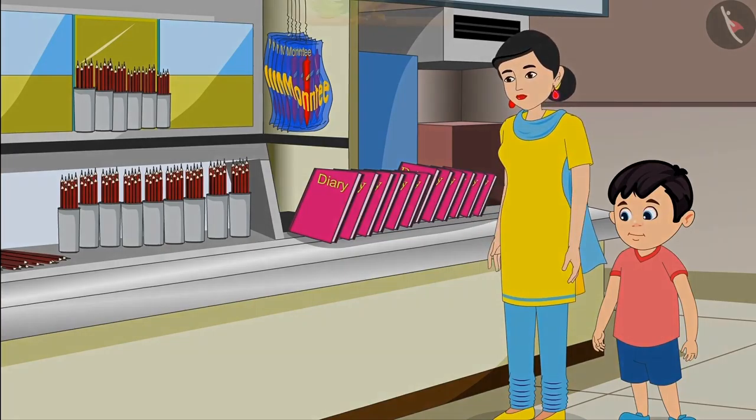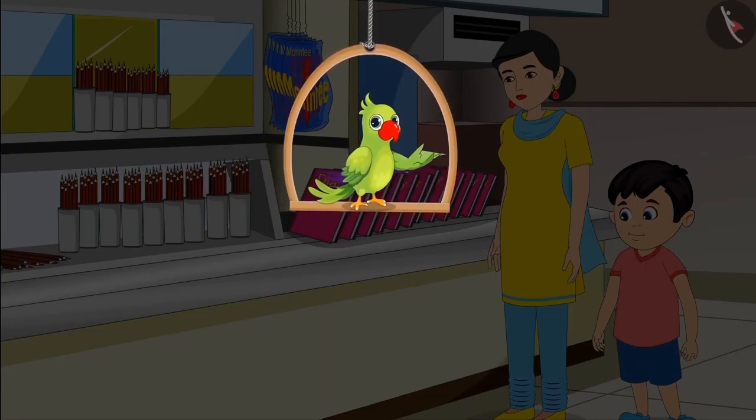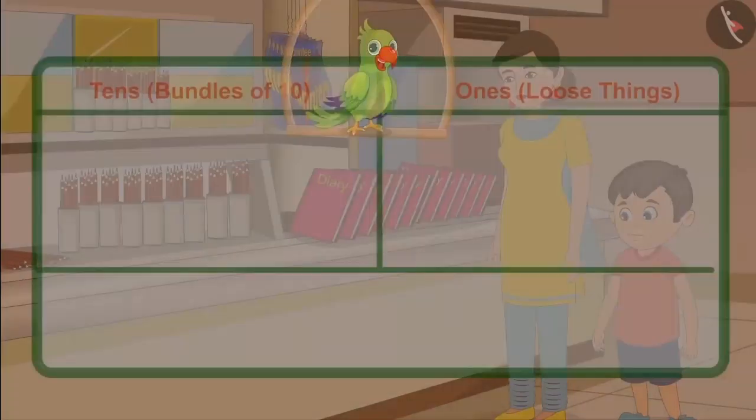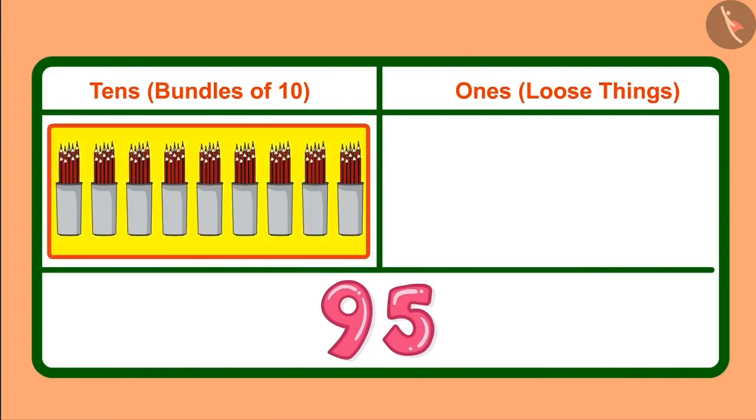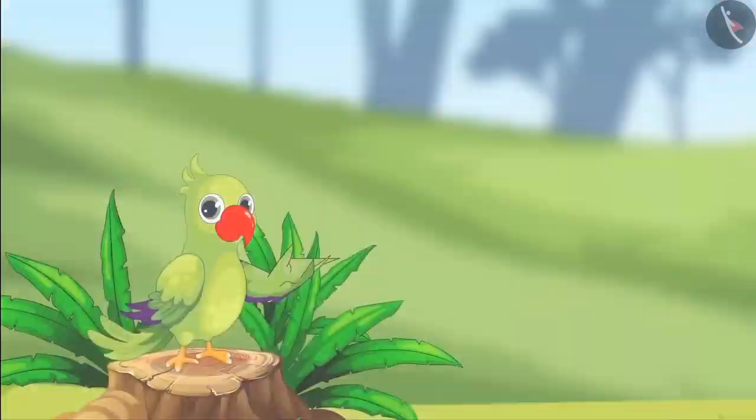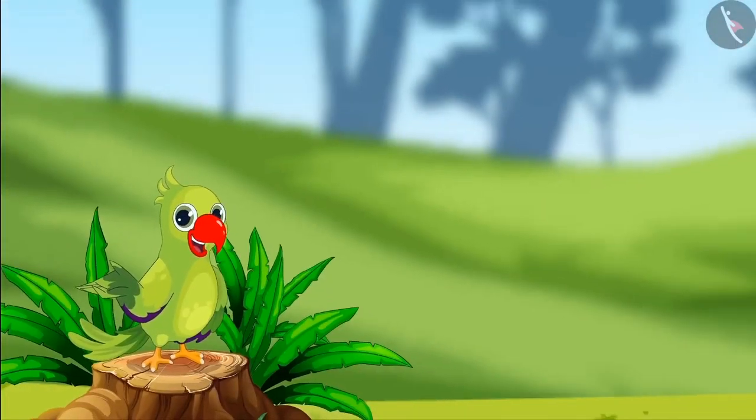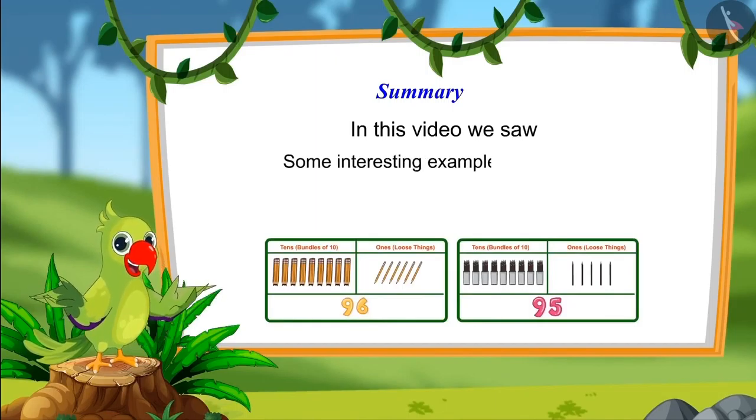Yes, Choto, you are absolutely right. But if there were only loose pencils, then it would have taken a long time. That's why here the pencils are also kept in bundle of ten. So, children, you saw how Choto used bundles and loose pencils to give ninety-five pencils. He gave nine bundles of ten pencils to his mother, which means nine tens. And together, five loose pencils, which means five ones.